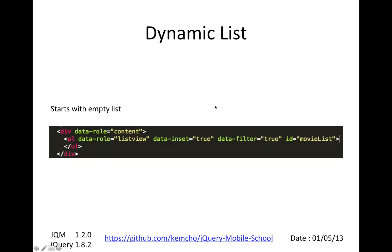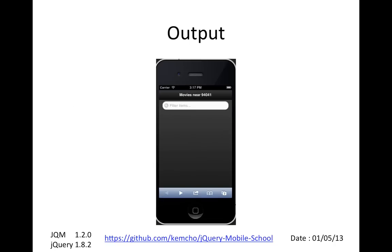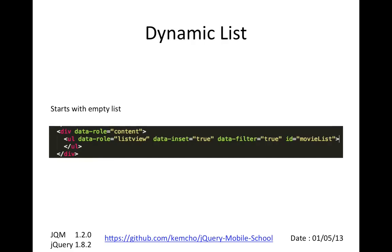We start off with an empty list — we remove all the HTML we previously wrote. We start with an empty list view with no items. We add a filter so that we get a good search bar, and the main thing we do is give it an ID of 'movie-list'. This ID is going to be used for dynamically adding movies, which we'll see in the next few minutes.